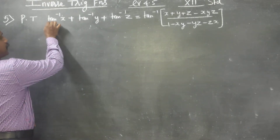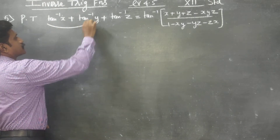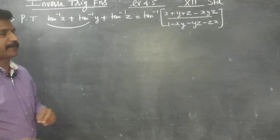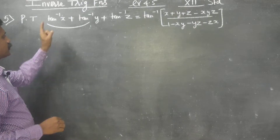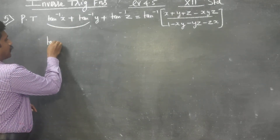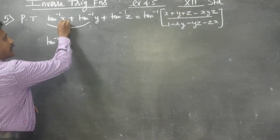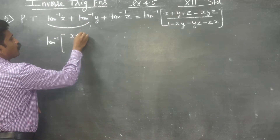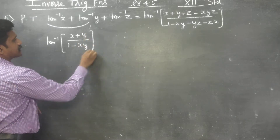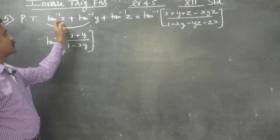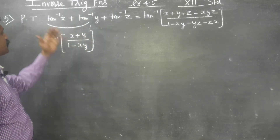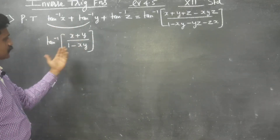I am going to combine the first two items: tan inverse of x plus tan inverse of y. The readymade formula is tan inverse of x plus tan inverse of y equals tan inverse of (x plus y) divided by (1 minus x times y). It is a readymade formula for tan inverse of a plus tan inverse of b equals tan inverse of (a plus b) by (1 minus ab). Then we still have tan inverse of z remaining.